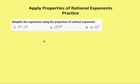First problem: 5 to the 1/2 times 5 to the 3/2. I'm going to use my product of powers property. I have the same base, different exponent, so I'm going to add the two exponents together. 5 to the 1/2 plus 3/2 gives me 5 to the 4/2, which is the same as 5 squared, which equals 25.